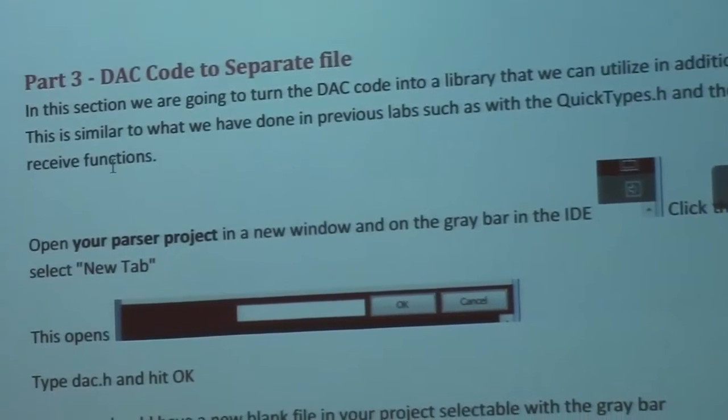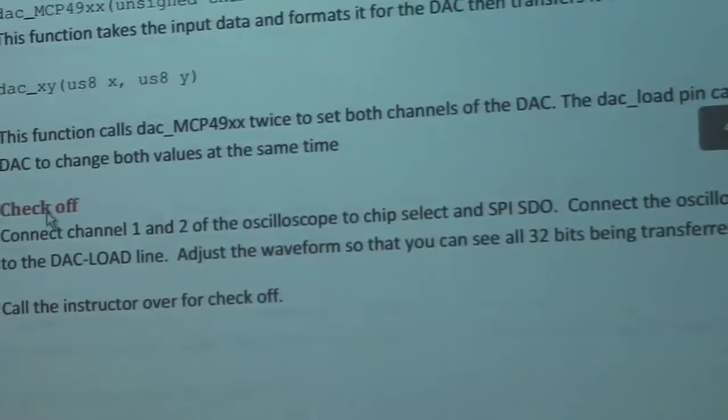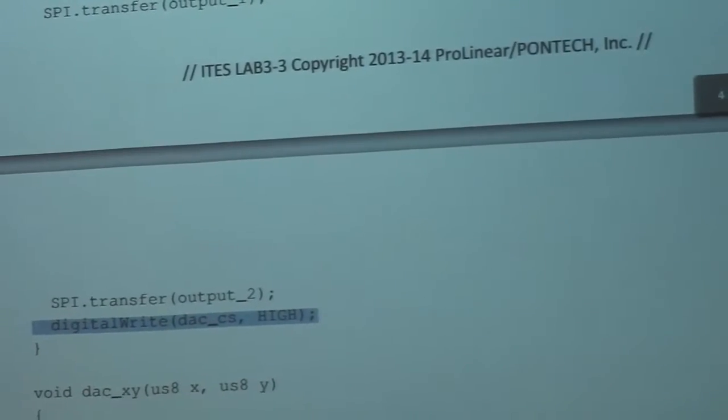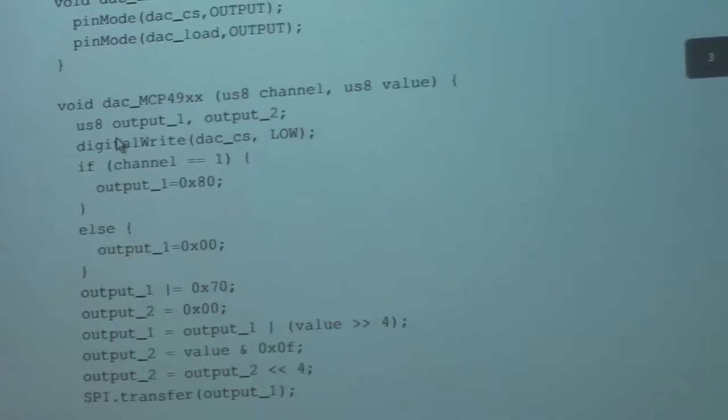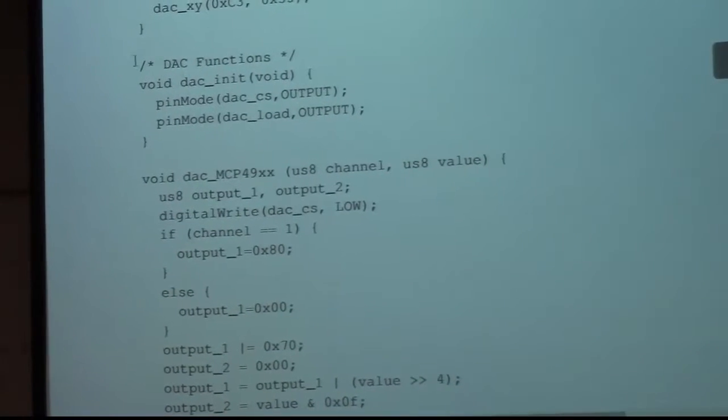In part 3, all we're doing is we're taking that DAC code, and we're putting it into a new tab. So we're going to take out this DACXY and the DAC MCP49XX, and we're going to move it into the DACInit.